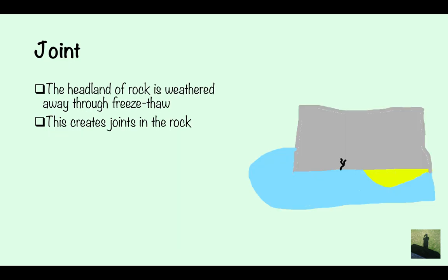It starts off with a joint. The headland of rock is weathered away through freeze-thaw weathering, and this creates joints in the rock. As you can see, you've got the joint here, which is caused by freeze-thaw weathering.